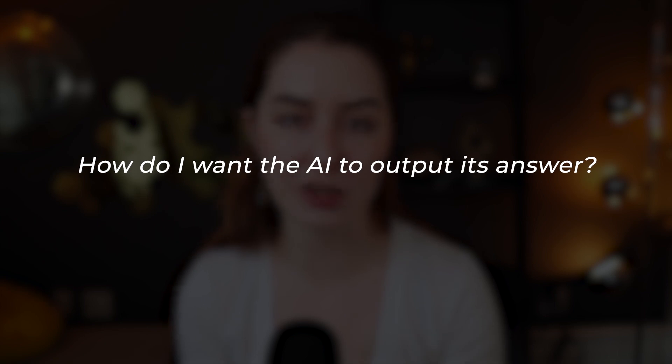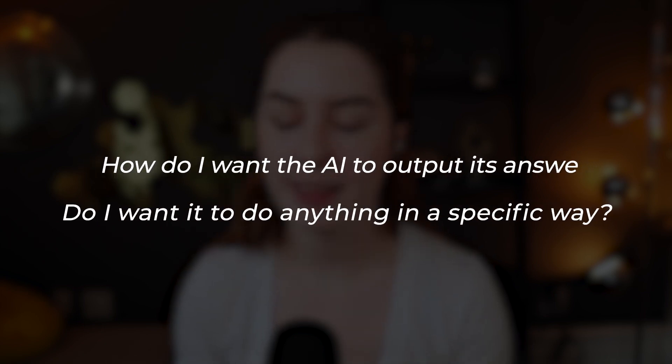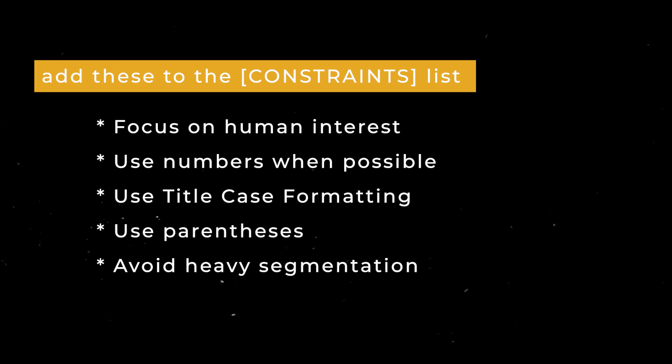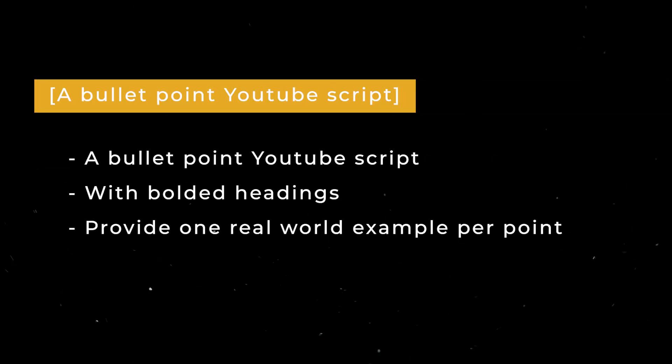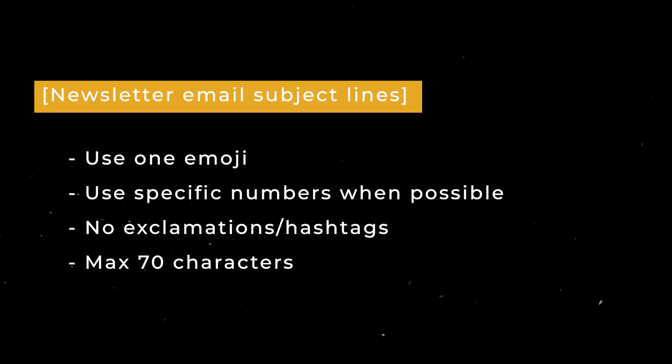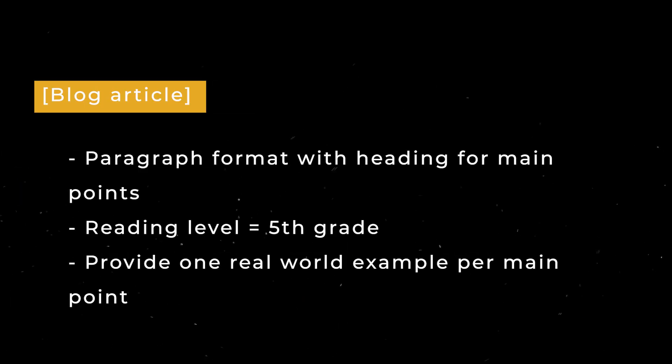Now let's add formatting instructions. Ask yourself: how do I want AI to output its answer? Back to the YouTube title example, I added formatting best practices as an experienced YouTuber: focus on human interest, use numbers when possible, use title case formatting, use parentheses, and avoid heavy segmentation. Here are example formatting and constraint sets for different tasks: a bullet-point YouTube script, a newsletter email subject line generator, an article, and a table. Feel free to screenshot and use these in your next prompt.